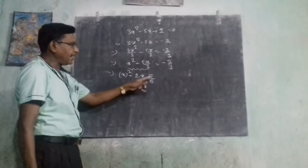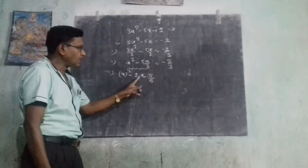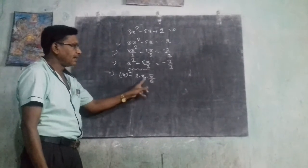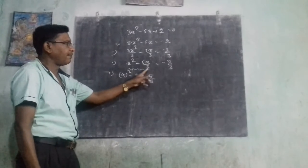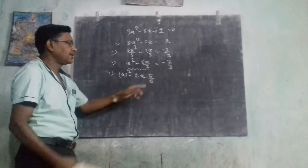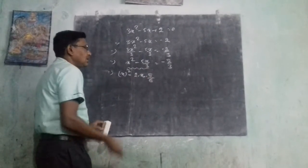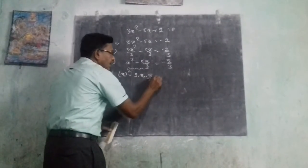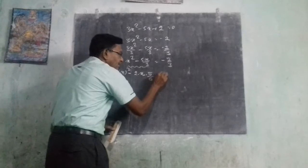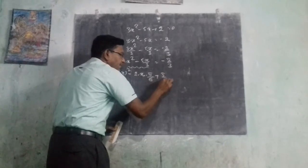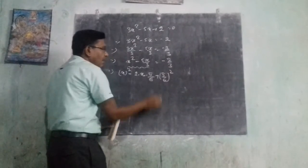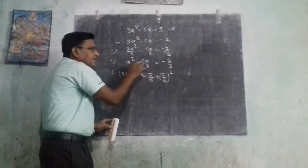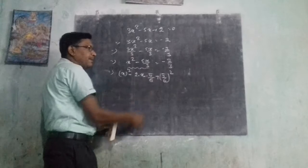If I take b as 5 over 6, then 2 times x times 5 over 6 gives 5x over 3, since 2 times 3 equals 6. So b becomes 5 over 6, and b squared is (5 over 6) squared. But in this expression, the b squared term is not present.